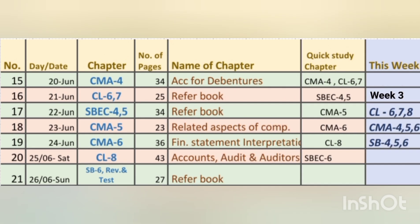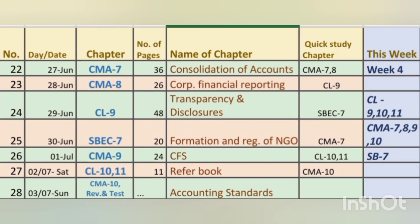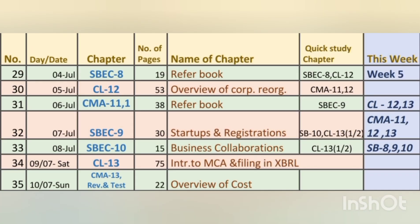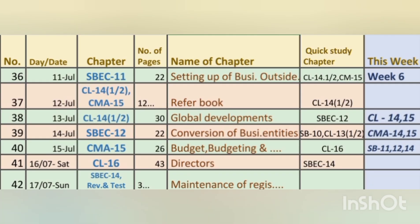In the third week we'll be studying around nine chapters with revision and test. For the fourth week, we'll be studying around eight chapters: CL 9, 10, 11; SBC 7; CMA 7, 8, 9, 10. For the fifth week we'll be studying around eight chapters — just give importance to CL chapter 13, Introduction to MCA 21 and Filing in XBRL. For the sixth week we'll be studying around seven chapters.